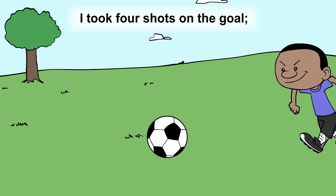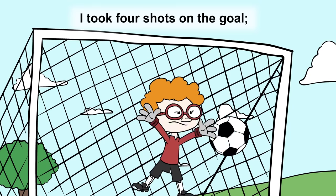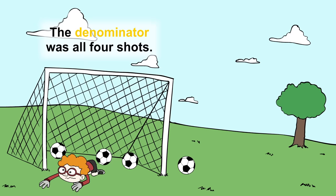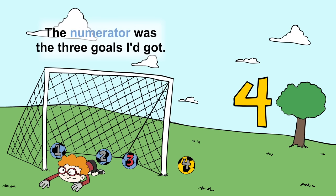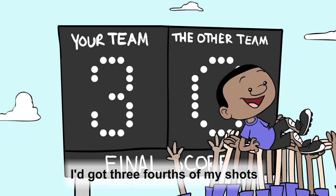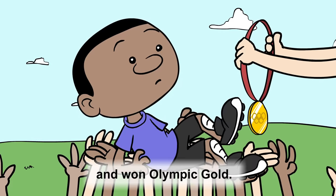I took four shots on the goal. Three went in, but one hit the pole. The denominator was all four shots. The numerator was the three goals I got. They are the team's record at taking a toll. They got three-fourths of their shots and one Olympic goal.